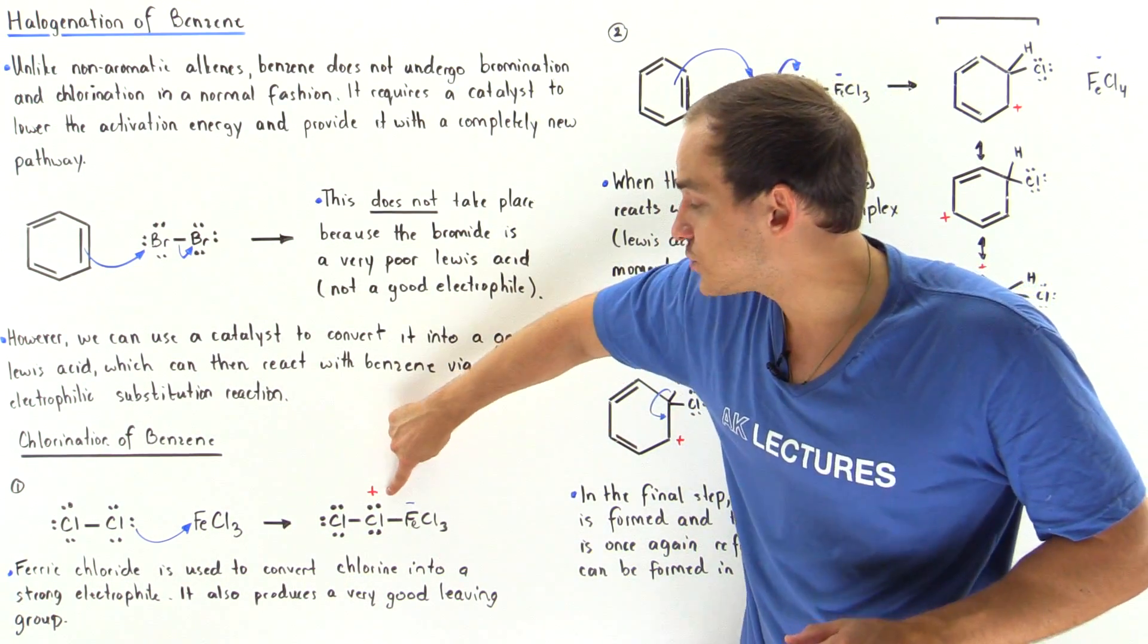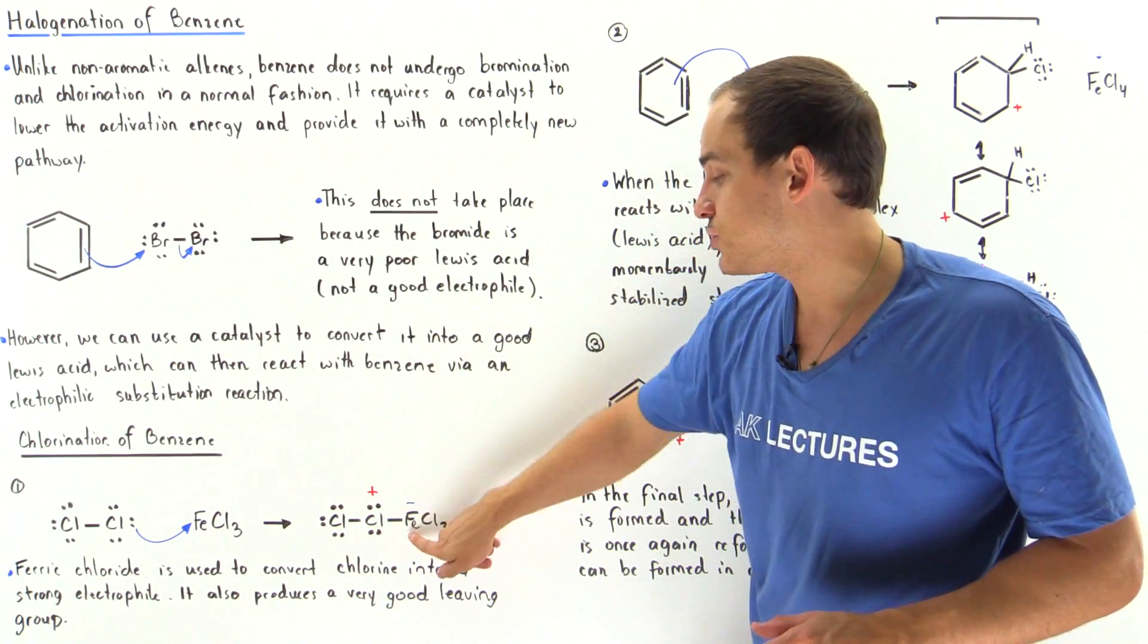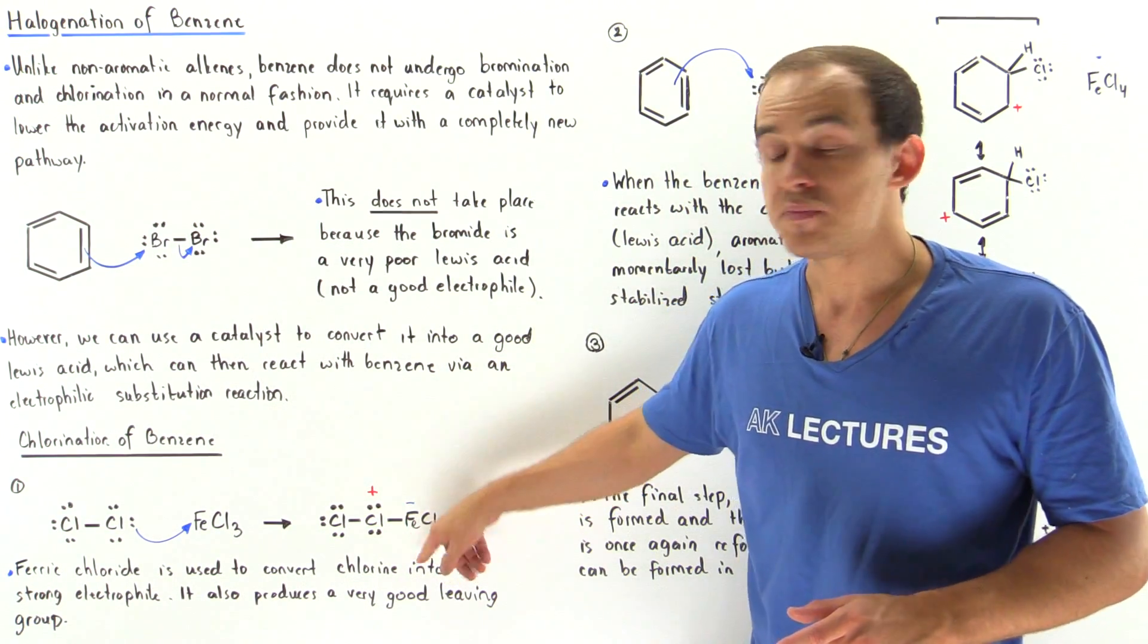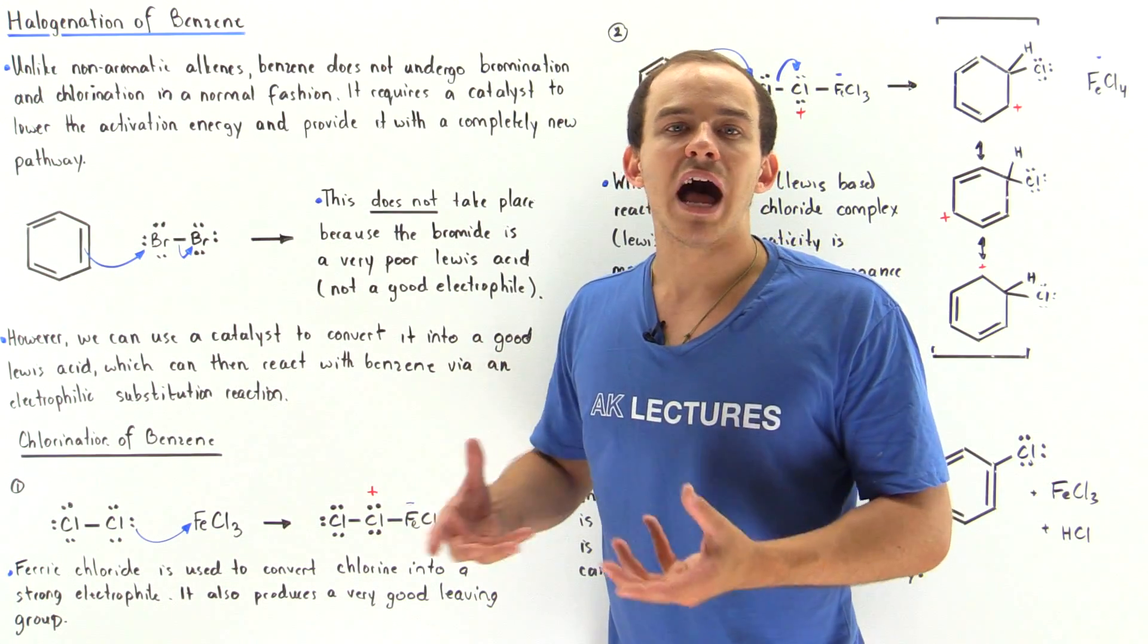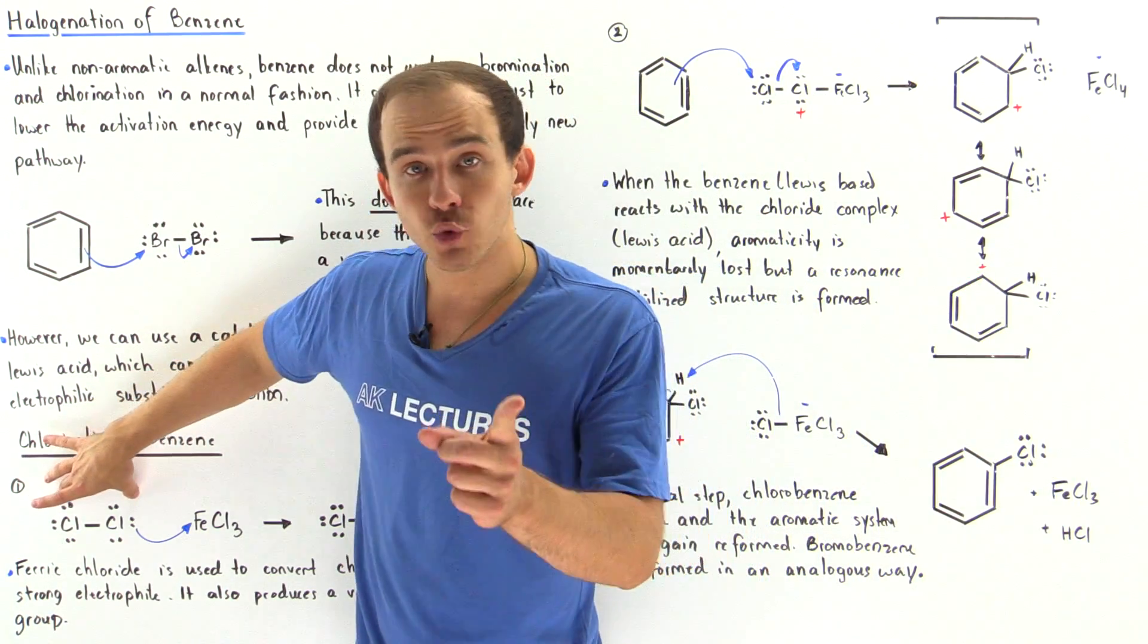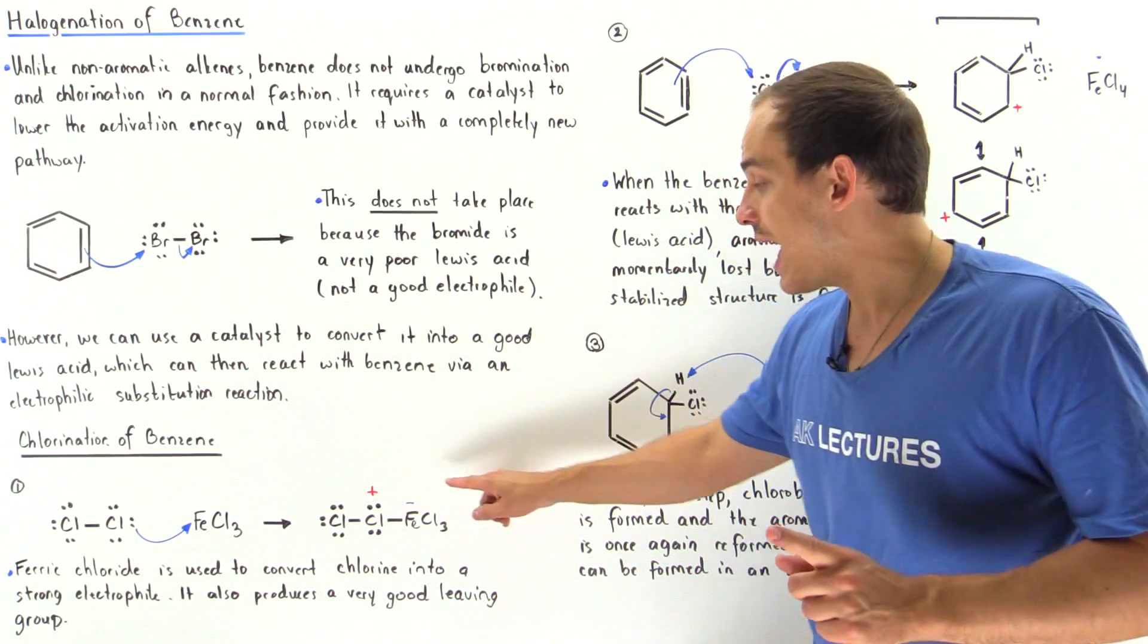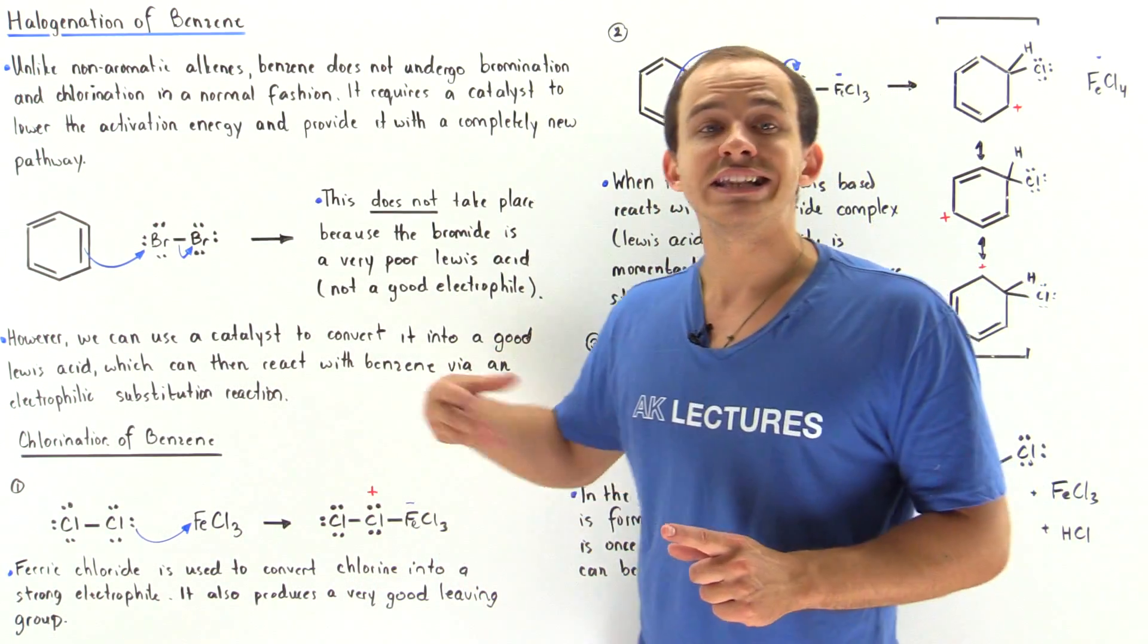It contains a positive charge on this chloride and a negative charge on this atom, and that creates a destabilized complex. So now we go from a bad Lewis acid to a good Lewis acid that also has a very good leaving group.